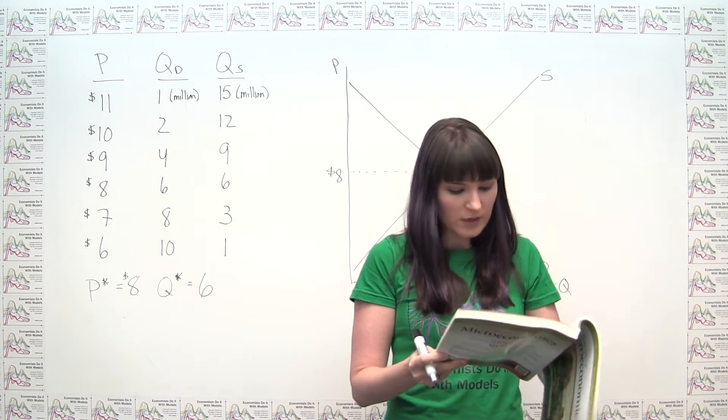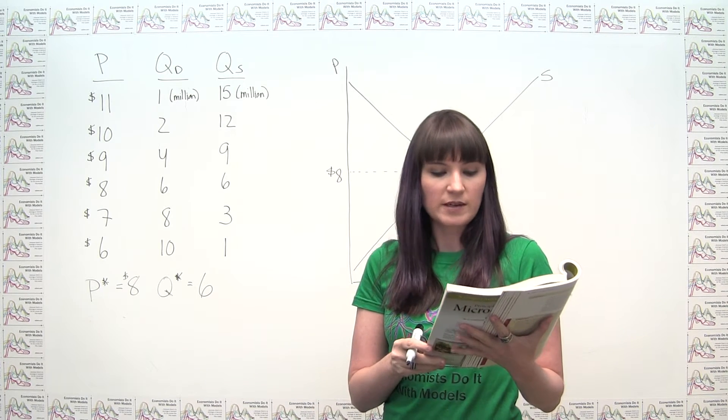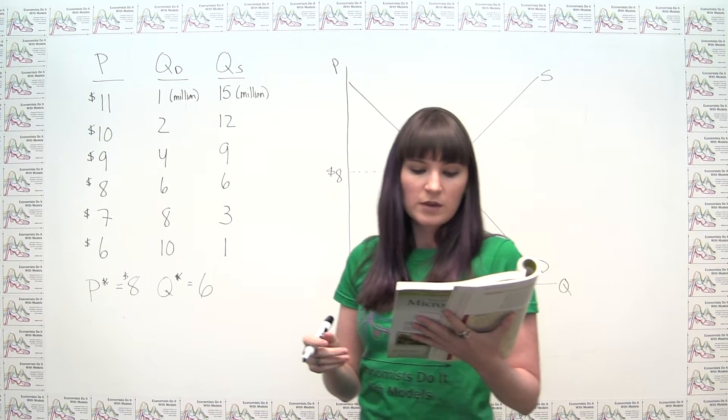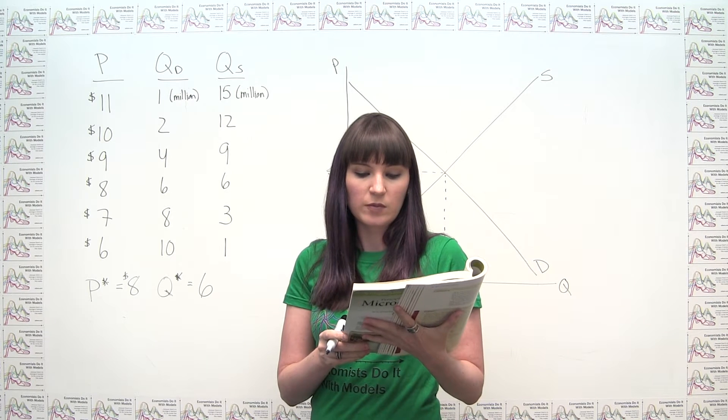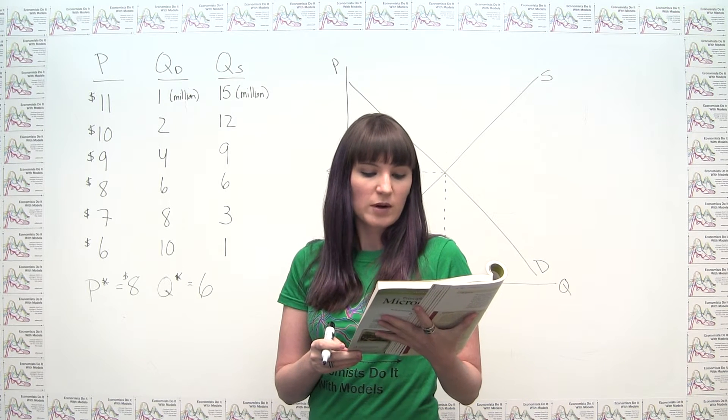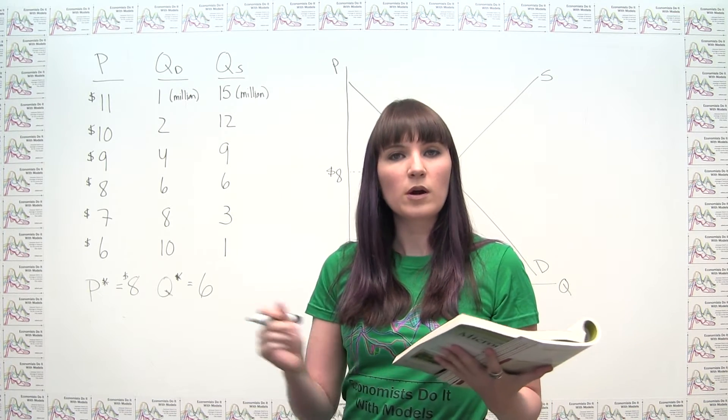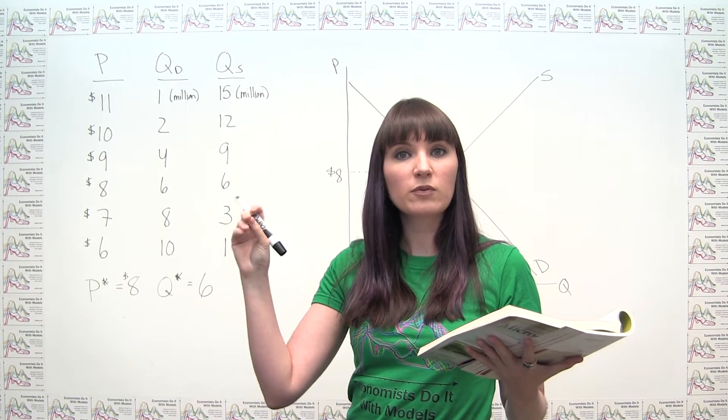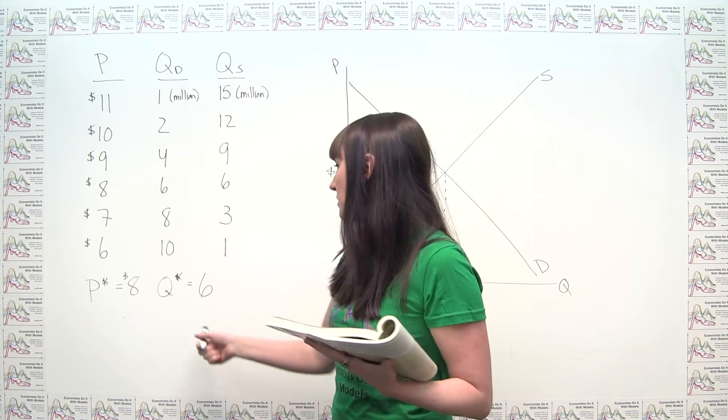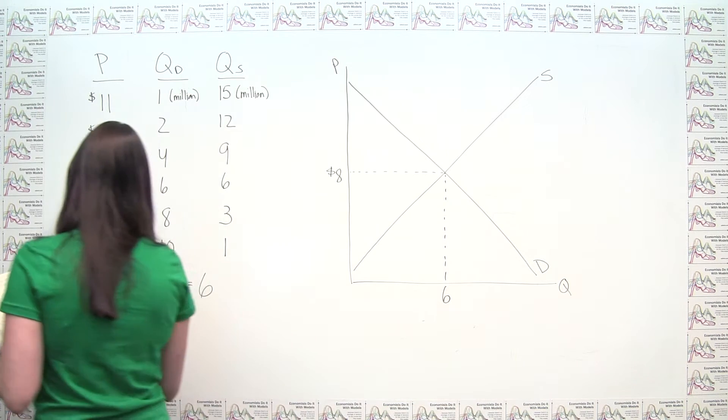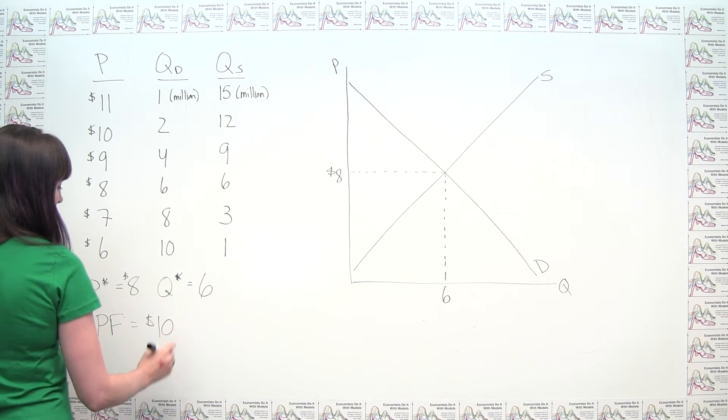So part B says frisbee manufacturers persuade the government that frisbee production improves scientists' understanding of aerodynamics and thus is important for national security. A concerned Congress votes to impose a price floor $2 above the equilibrium price. And then we're asked what is the new market price and how many frisbees are sold. So if our price floor, or our legally mandated minimum price, we can't go below a floor, is set $2 above the equilibrium price, we can say well we know the equilibrium price, so this must tell us that our price floor, which is called PF, is set at $10.